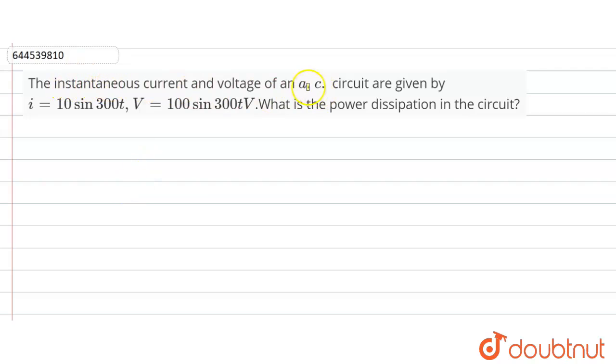The instantaneous current and voltage of an AC circuit are given by i = 10 sin 300t and V = 100 sin 300t volts. What is the power dissipated in the circuit?